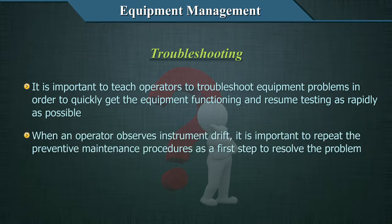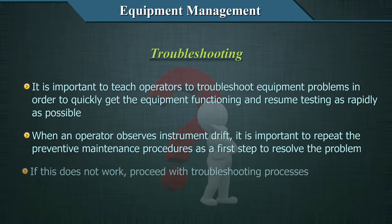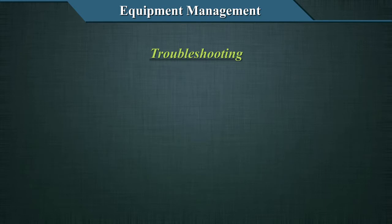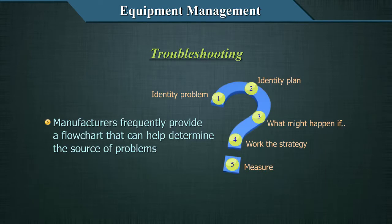When an operator observes instrument drift, it is important to repeat the preventive maintenance procedures as a first step to resolve the problems. If this does not work, proceed with troubleshooting processes. Manufacturers frequently provide a flowchart that can help determine the source of problems.